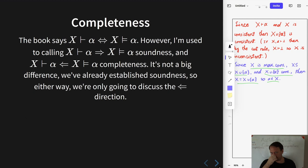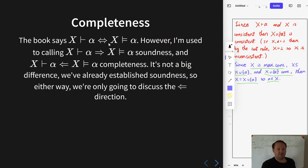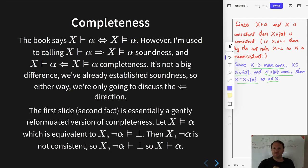Moving on to completeness, I want to point out one small difference between how I use the word completeness and how the book uses it. I agree with the book that soundness means whenever there is a proof then it is valid — that is, if x proves alpha then x entails alpha. What is different is that I'm used to saying completeness is just the other direction, whereas the book takes completeness to be the biconditional. I'm only going to prove the right-to-left direction: if x entails alpha then x proves alpha. The previous result we just proved is almost the entire proof of completeness.